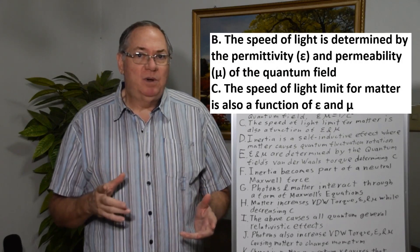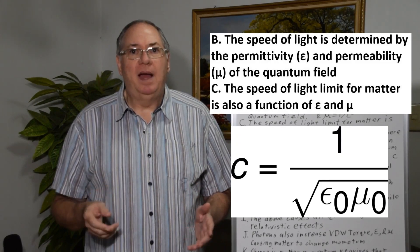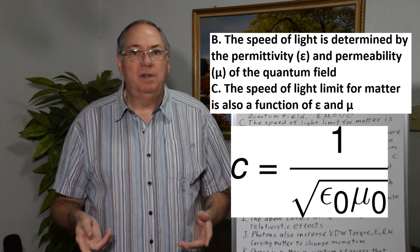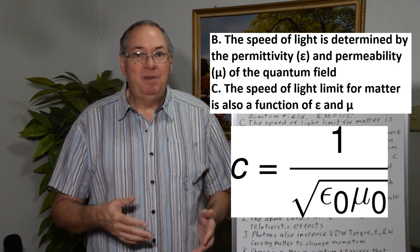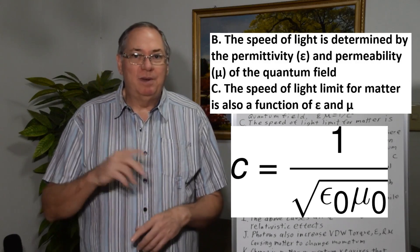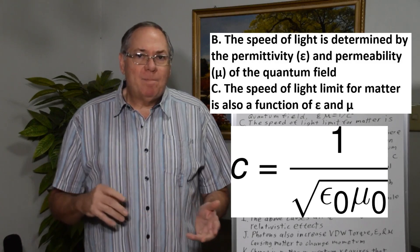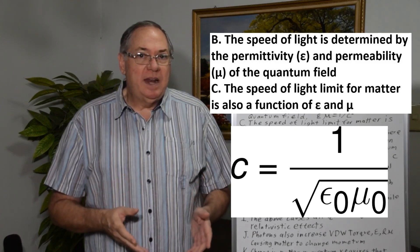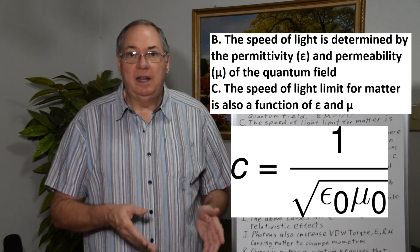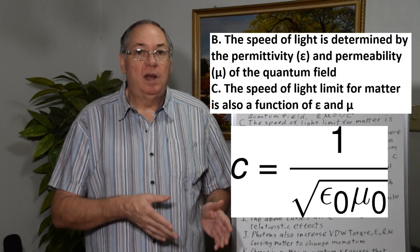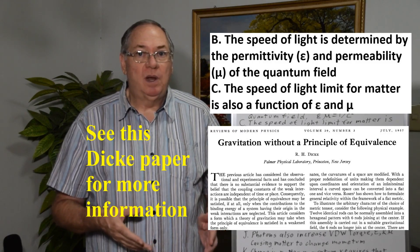And one of the important things to understand at first is the speed of light is determined by the permittivity and the permeability of the quantum field. And this is the well-known equation that ε μ equals 1 over c squared, or you can flip it around and c equals 1 over the square root of ε μ. So we can understand the speed of light is a function of the permittivity and permeability, the electric and magnetic constant of the quantum field.